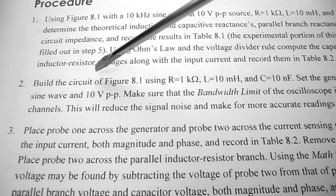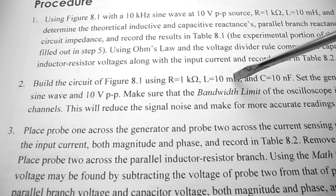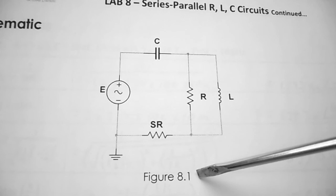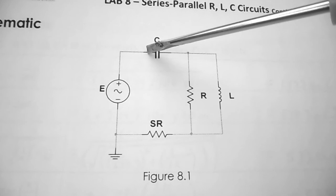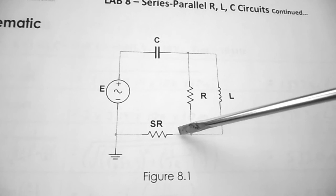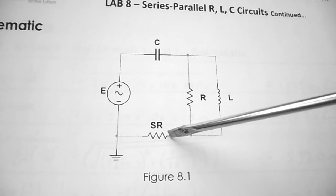Under procedure step number two, we're going to build the circuit of Figure 8-1 using R equals 1k, L equals 10 millihenries, and C equals 10 nanofarads. We're going to set the function generator to a 10 kilohertz sine wave at 10 volt peak to peak. The function generator is connected to the capacitor, which connects to the resistor and inductor in parallel. The parallel branches come back and join at the 10 ohm sensing resistor for measuring IT, and that returns to the common of the function generator.